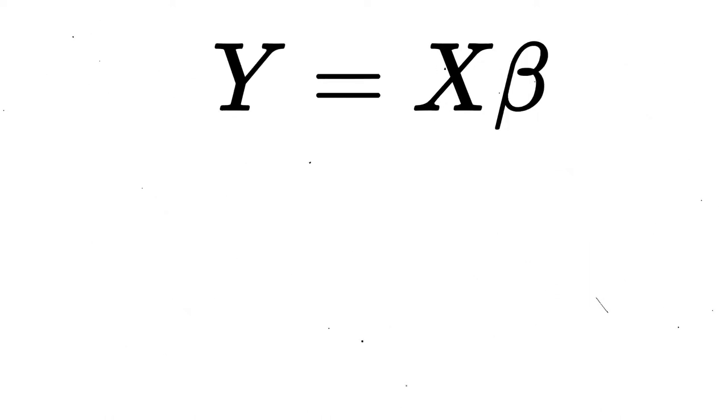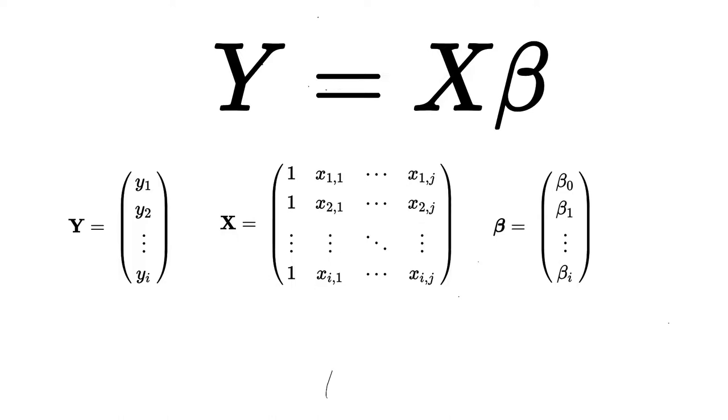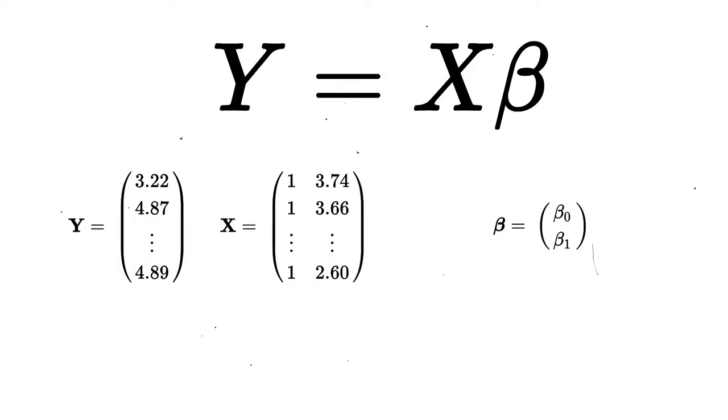The beta term can be combined into one vector holding beta 1 and beta 0. If this notation is new, I promise there's nothing to be afraid of. Vectors are just columns of data. Matrices are one or more columns of data. At this point, everything in this equation has real data underneath the hood.